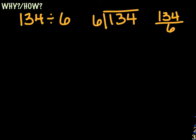So when we think about writing a division problem, let's say that we have 134 divided by 6. As you can see, I have written that problem three different ways, and they all mean the same thing — they all mean 134 divided by 6. So how do we go about doing that? Well, we might want to start with multiples of 10.